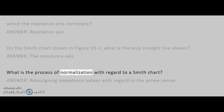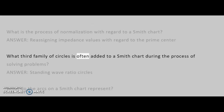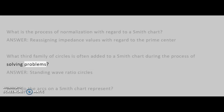What is the process of normalization with regard to a Smith chart? Answer: Reassigning impedance values with regard to the prime center. What third family of circles is often added to a Smith chart during the process of solving problems? Answer: Standing wave ratio circles.